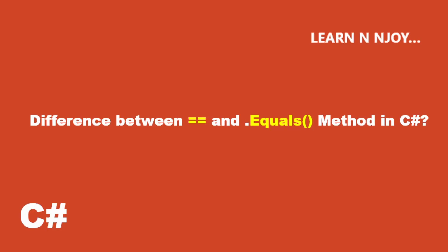Hello friends, welcome to my video. Today I am going to talk about the difference between the equality operator — that is the double equal sign — and the dot equals method in C#.